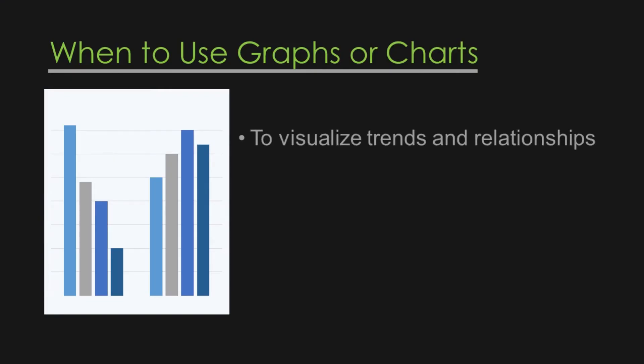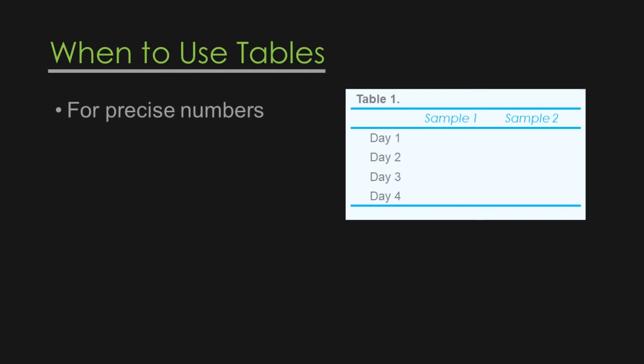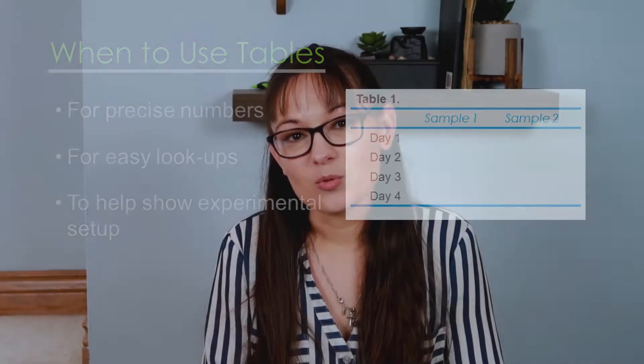The first thing we'll talk about is determining whether to choose a chart or a table to convey your information. There are some quick guidelines: use graphs or charts to visualize trends and relationships, and to present statistical information. Use tables for precise numbers or easy lookup values. You can also use a table to show your experimental setup. Avoid using a table if just one or two sentences could clearly present the same information.